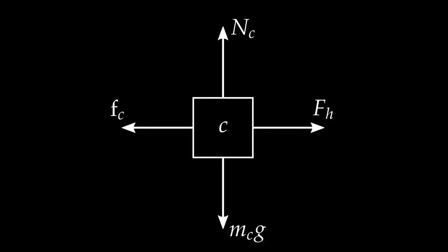Next on the list are forces of contact. Any time two surfaces are in contact, there exists a force between them — the normal force, where 'normal' means perpendicular. I draw a force directed upward on my free body diagram because the cart sits on the ground and the ground pushes upward on the cart. The cart exerts a force downward on the ground, but that's not the force I want here — I want the force exerted on the cart.